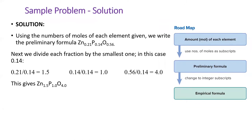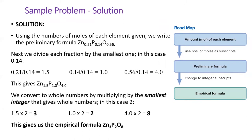However, they're not all whole numbers yet, so we need to multiply this formula by 2 to get these nice whole numbers. This gives us the empirical formula of 3 zinc atoms, 2 phosphorus atoms, and 8 oxygen atoms.